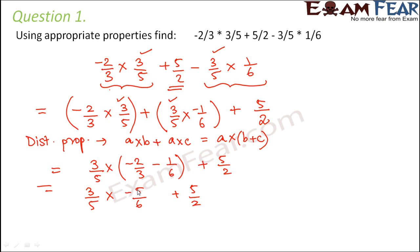So here 5 and 5 will cancel out, 3 goes into 6. So this is minus 1 by 2 plus 5 by 2. So this is equal to 4 by 2, which is 2. So this would be our answer.